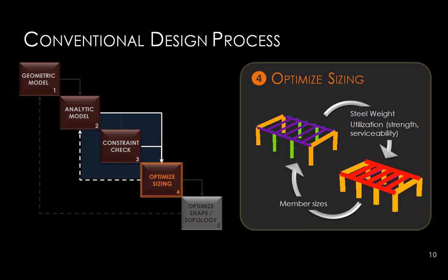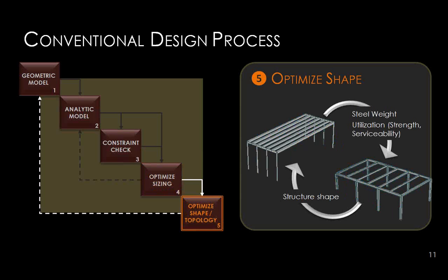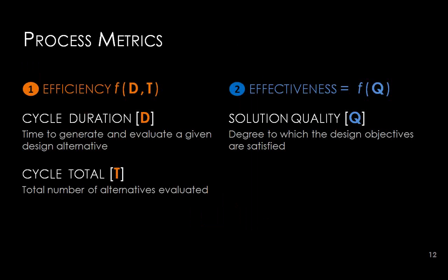Based on utilization results, the engineer has a couple of options to improve the design. One is optimizing sizing — changing the cross-sectional areas of the structure. Another is shape — changing the centerline geometry of members in the frame, actually changing the shape or geometry of the structure. With that conventional process in mind, our questions were: how long does it take engineers to look at a design option (cycle duration), how many options do they look at, and what is the quality of solutions generated?